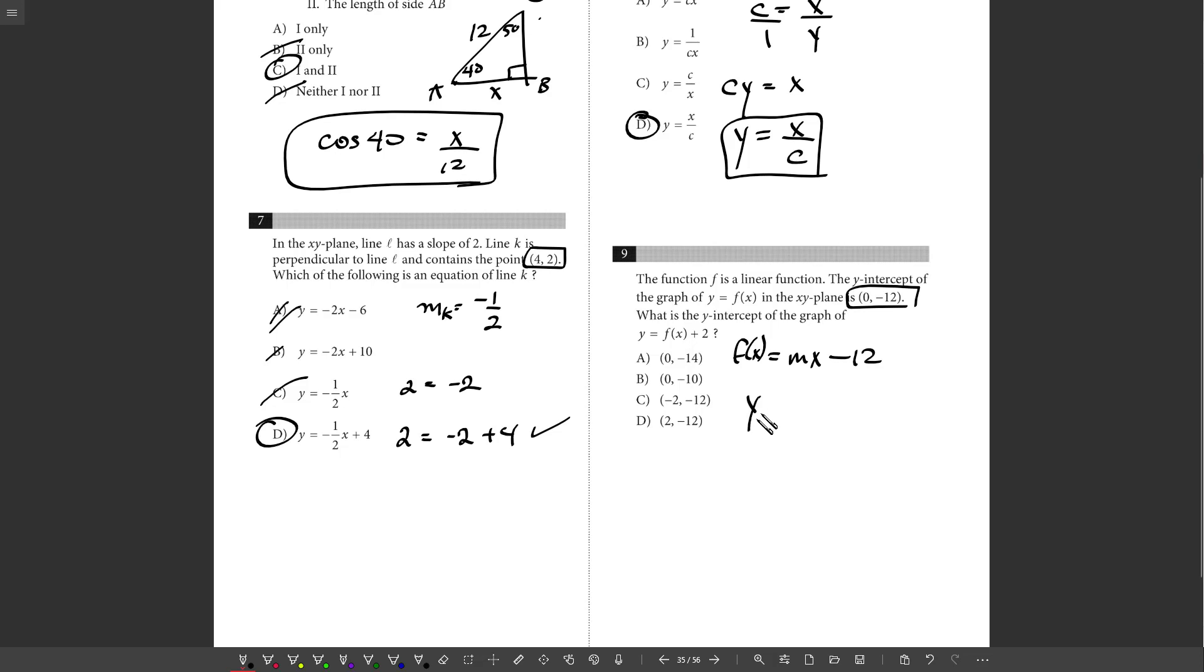So what I want to know now, what if I just take my function, MX minus 12, and I add 2 to it? Well, that means I'm going to have MX minus 10. And so now my y-intercept for this line is negative 10. I can get rid of C and D immediately because I need my y-intercept to have x-coordinates of 0. So it comes down to A versus B. And from this, we can get choice B.